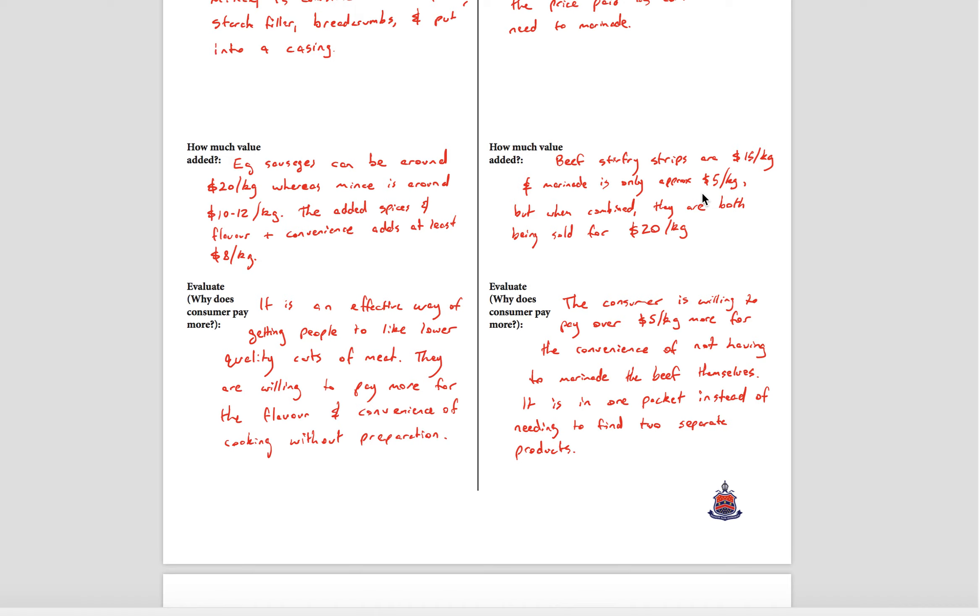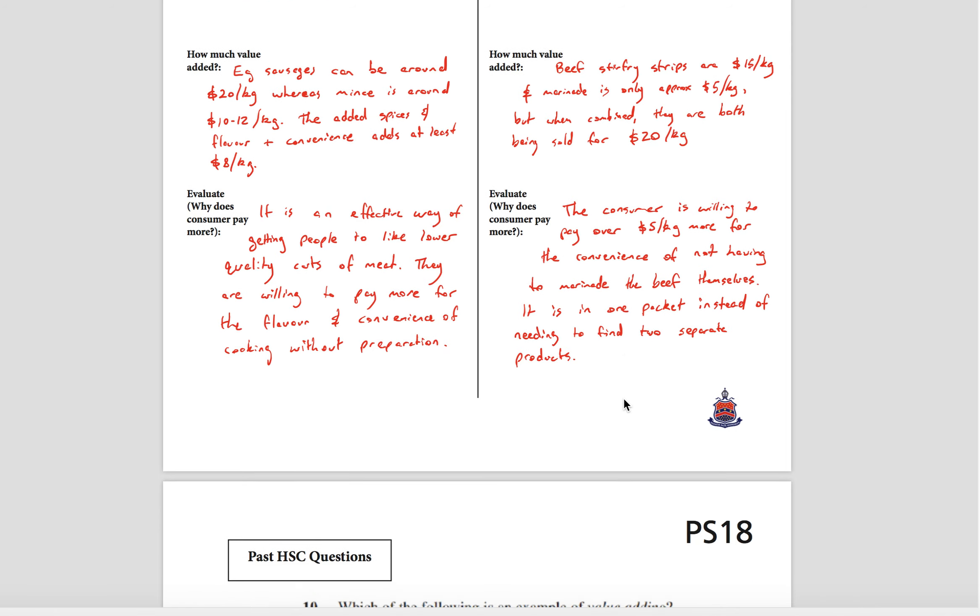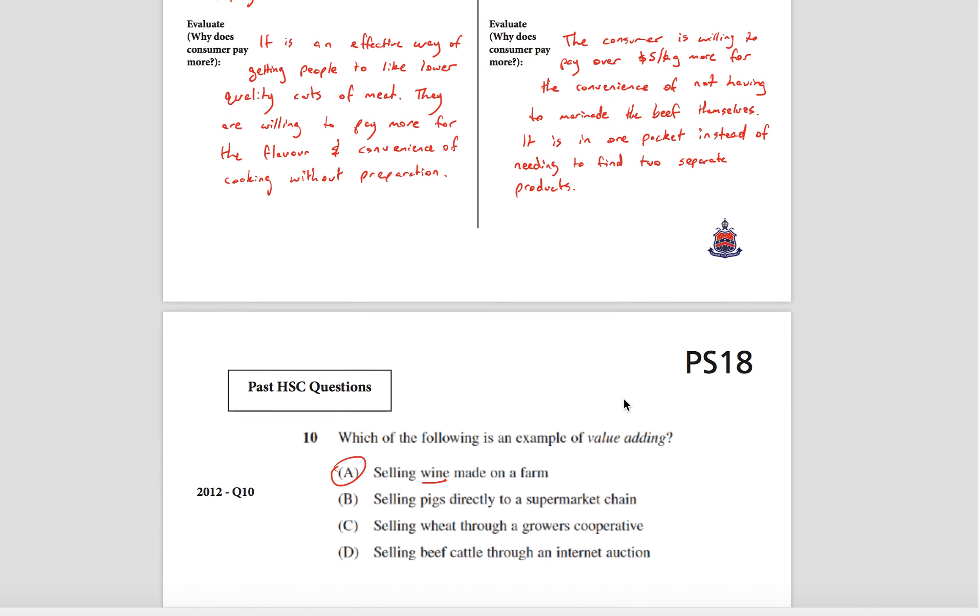Normally, beef stir-fry strips without marinade are $15 a kilo, and marinade really only costs like $5 or so dollars a kilo roughly. But when you combine them, they're actually being sold for $20 a kilo. So that marinade is being sold for $20 a kilo and the $15 beef is also being sold for $20 a kilo. That's value-adding because the consumer is willing to pay at least $5 a kilo more just for the convenience and not having to go out and buy the marinade, put it with the beef, and waste the time doing that.